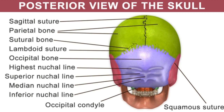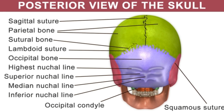Did you know that when we nod, we use the atlanto-occipital joint, which is the joint located between the atlas vertebra C1 and the occipital bone? This joint helps in the flexion and extension of the neck.